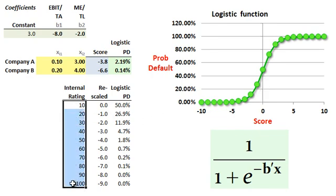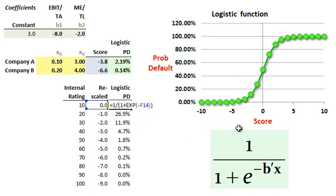Closer to 0 on the internal scale is going to get somewhere closer to here in the logistic. I remap the internal ratings to rescaled credit scores. Once I've done that, I can apply the logistic function in the same way that we did before.